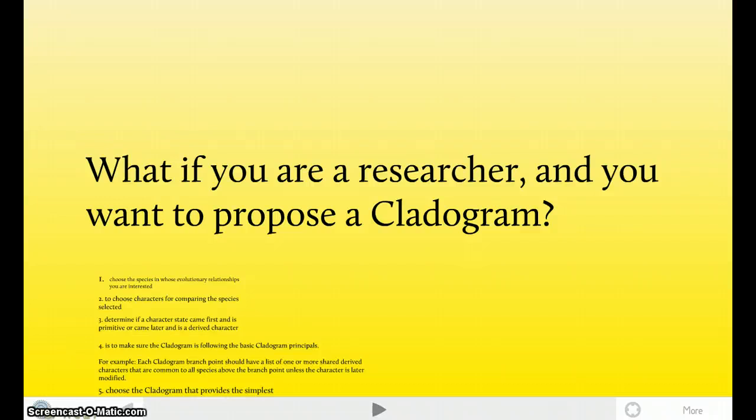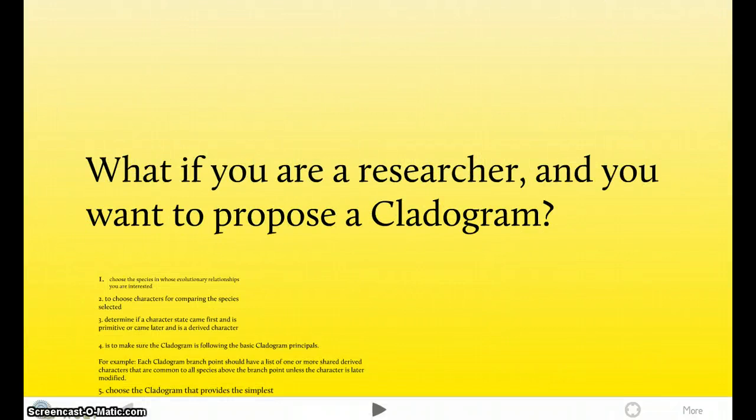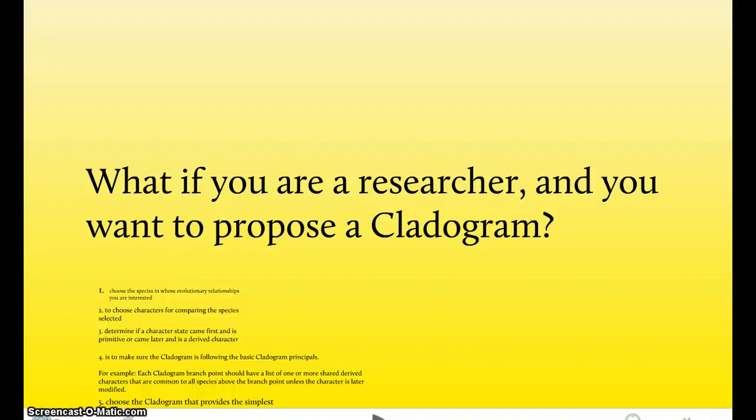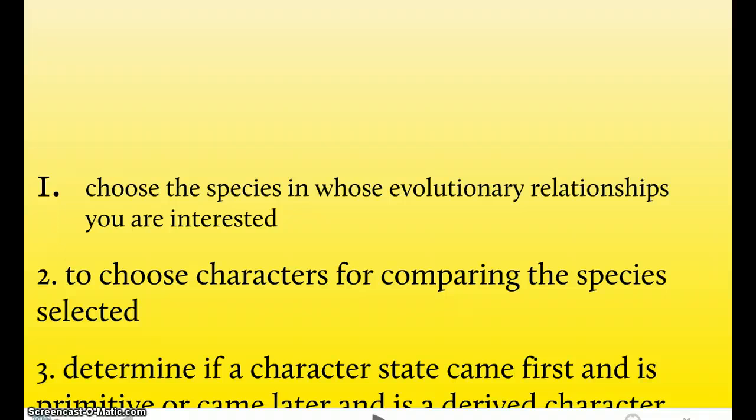Next, if you were a researcher and you wanted to propose a cladogram, you can't just research all your stuff nicely and then decide you're going to publish it. It's just not how it works. So you have to follow these six simple steps to make sure you can propose your cladogram. First step, step one, choose the species in whose evolutionary relationships you're interested in. Pretty basic.